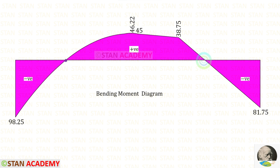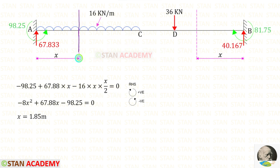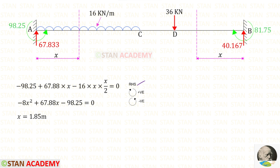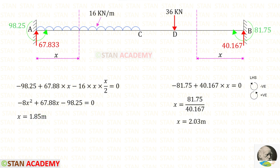In the bending moment diagram, at two points the bending moment becomes 0. These two points are called the points of contraflexure. Let us make sections at the points of contraflexure to find their distances. The first section is at a distance X from point A, and the second section is at a distance X from point B. Using the right hand side rule we take moments about the first section to find that X, then using the left hand side rule we take moments about the second section to find the other X.